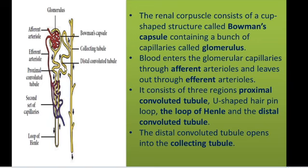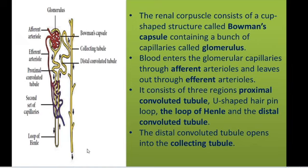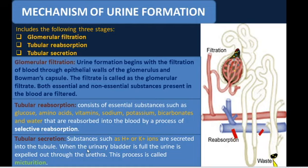The distal convoluted tubule then opens into the collecting tubule. This is the pathway for the purification of blood, where each stage performs a kind of purification. The nitrogenous wastes are drained into the renal pelvis, leading to the ureter. Through the ureter, urine is stored in the urinary bladder and expelled out through the urethra.